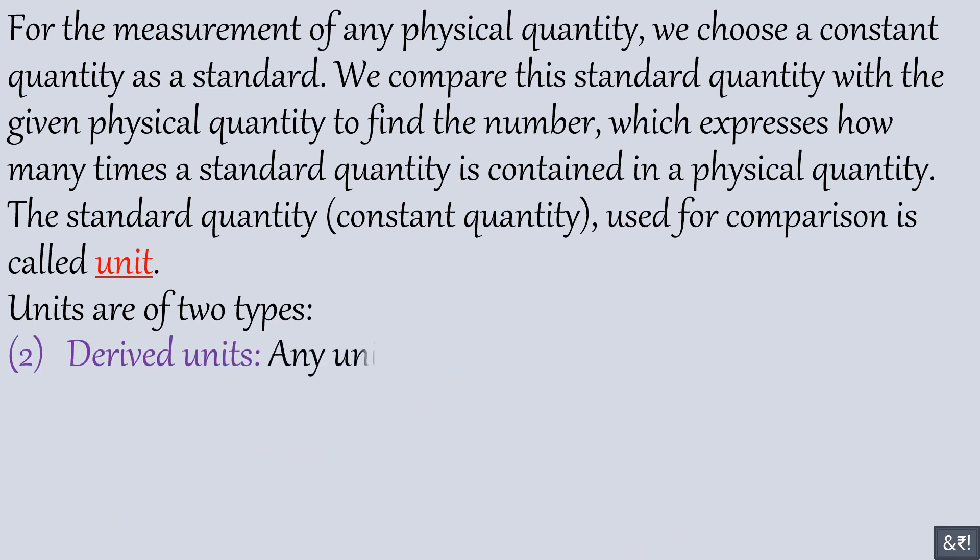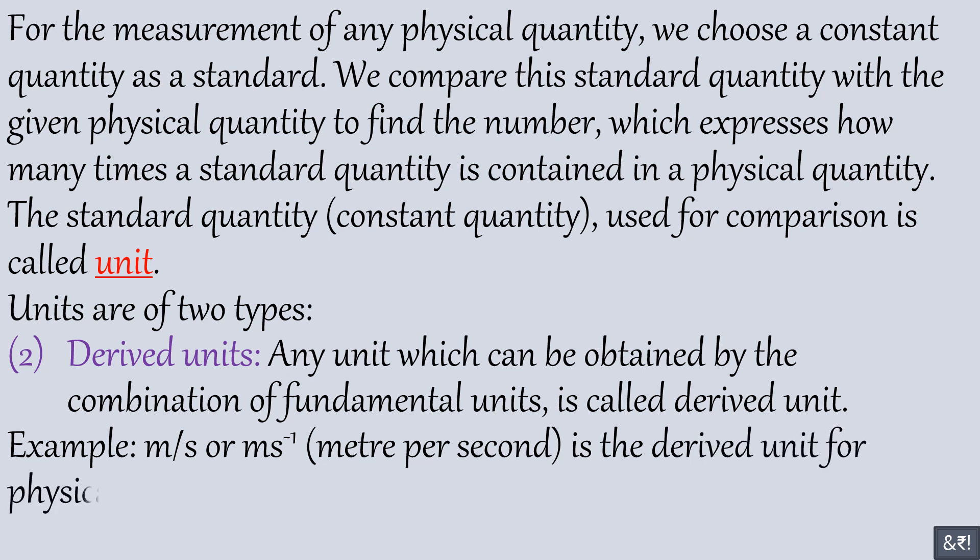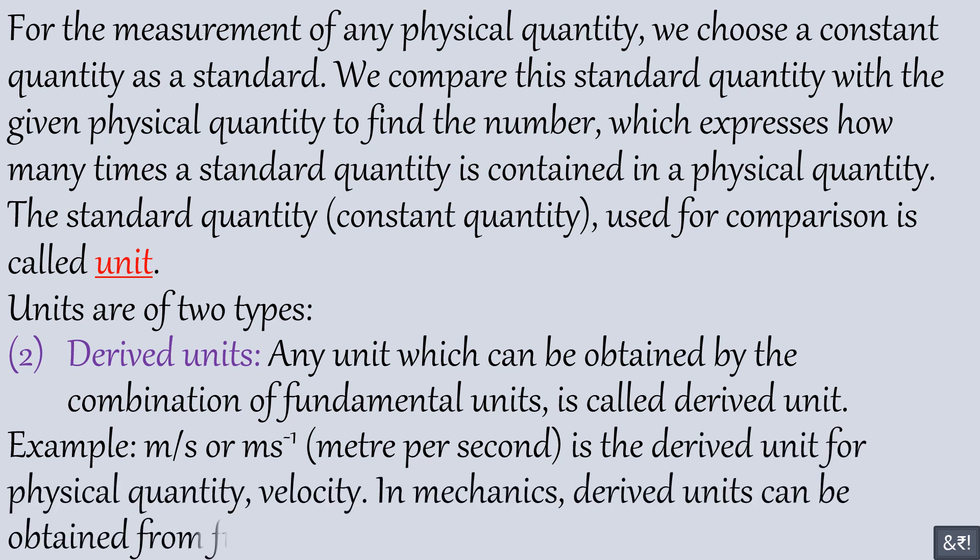Second, derived units: any unit which can be obtained by the combination of fundamental units is called derived unit. Meter per second is the derived unit for physical quantity velocity. In mechanics, derived units can be obtained from fundamental units of mass, length and time.